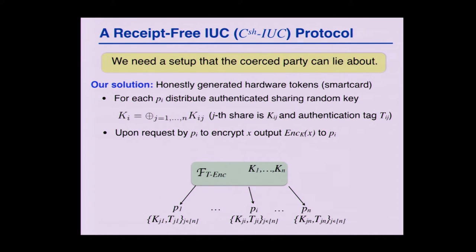This means that all parties together hold all the keys; any n minus one of those parties have no information. And there is no way they can lie about those keys, because they are authenticated. Additionally, any party can query the token, and the token will return an encryption under that party's key of the queried input. This is the functionality we need from our token.